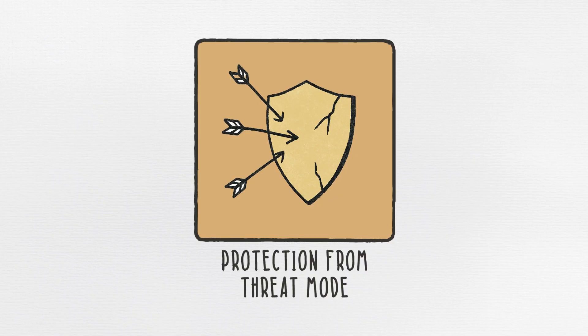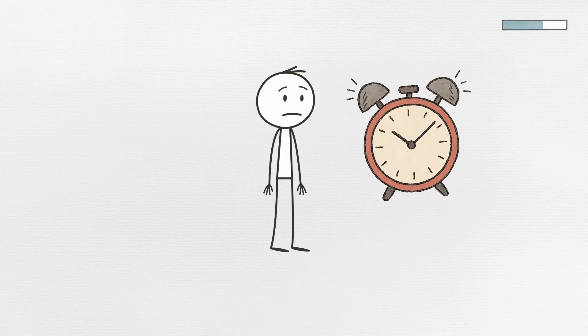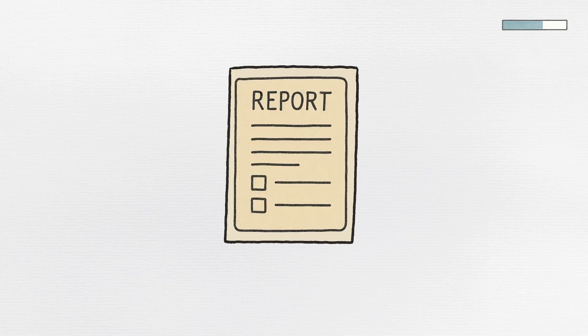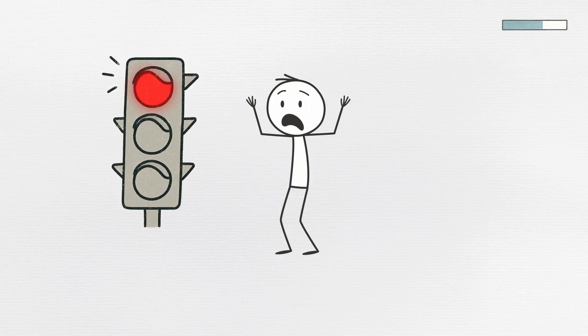Number five, protection from threat mode. Your amygdala, the brain's alarm system, can't tell the difference between a charging rhino and a challenging assignment. Both register as potential threats that need to be avoided.